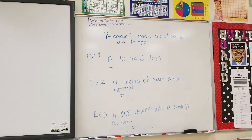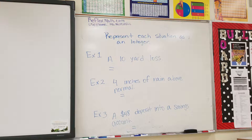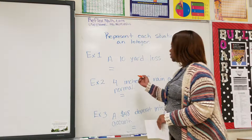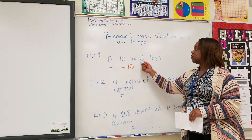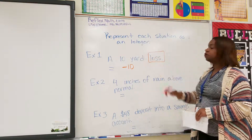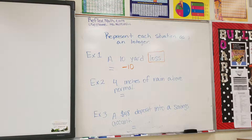Now we have three examples on the board. We want to represent each situation as an integer. Example number one: a 10-yard loss. How would we represent a 10-yard loss? We would represent it as negative 10. Why? Because it is a 10-yard loss. Loss is our key word — a loss would be a deficit, a decrease. So therefore, we would represent it as a negative.